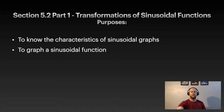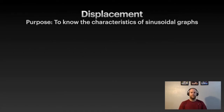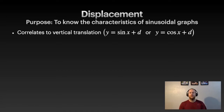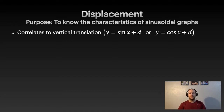We're dealing with displacements, specifically vertical translations — this is the d value. Looking at a, b, h, and k, this is technically the k value, and you'll see it written as both d or k. I'm using d for now just to keep you on your toes, but it doesn't matter — k and d are the same thing.